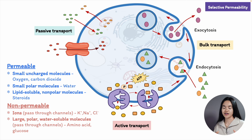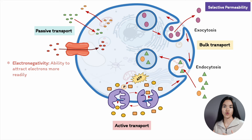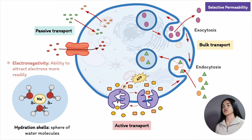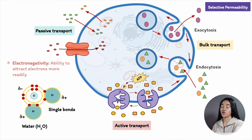The term polar means there is an electronegative difference between the bonding atoms. Electronegativity is the ability of an atom to attract electrons more readily. In polar molecules, the electrons are shared unequally and there are regions of slightly positive and negative charges, whereas non-polar means the atoms share electrons almost equally. The reason why the lipid bilayer doesn't allow ions to pass through is due to their charges and their strong electrical attraction to water molecules. An atom that has a charge has a surrounding shell of water — a hydration shell — which is why it can't pass through.